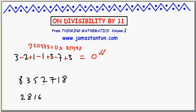Alright, here's another number, 8,352,718. To test if that's a multiple of 11, we do the alternating sum of its digits.